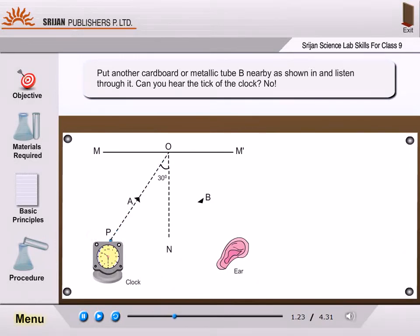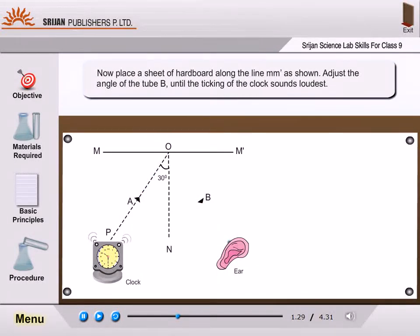Can you hear the tick of the clock? No. Now place a sheet of hardboard along the line MM' as shown. Adjust the angle of tube B until the ticking of the clock sounds loudest.